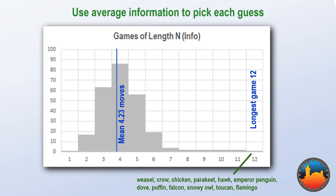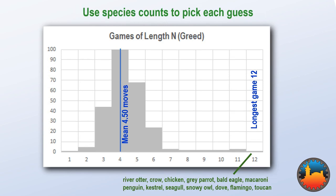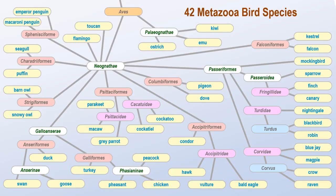If rather than calculating the average information we go down each of the branches that has the largest number of leaf species, would that have a different effect on the longest game? Well, the average game length is bigger and the longest game is just as long — there seems little point. The longest game here ends up at Toucan, right next to Flamingo. What is it about the birds?